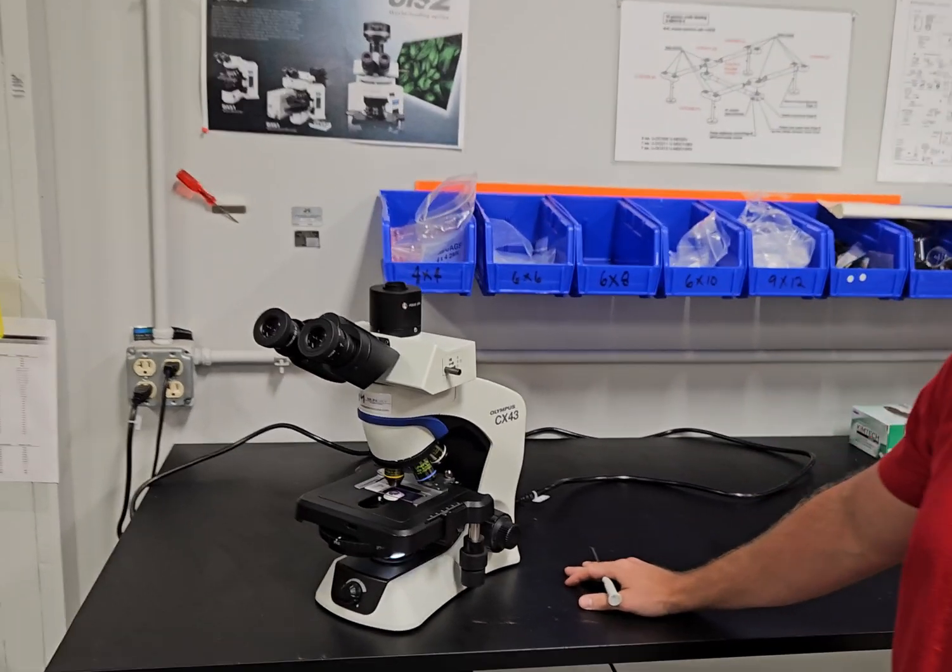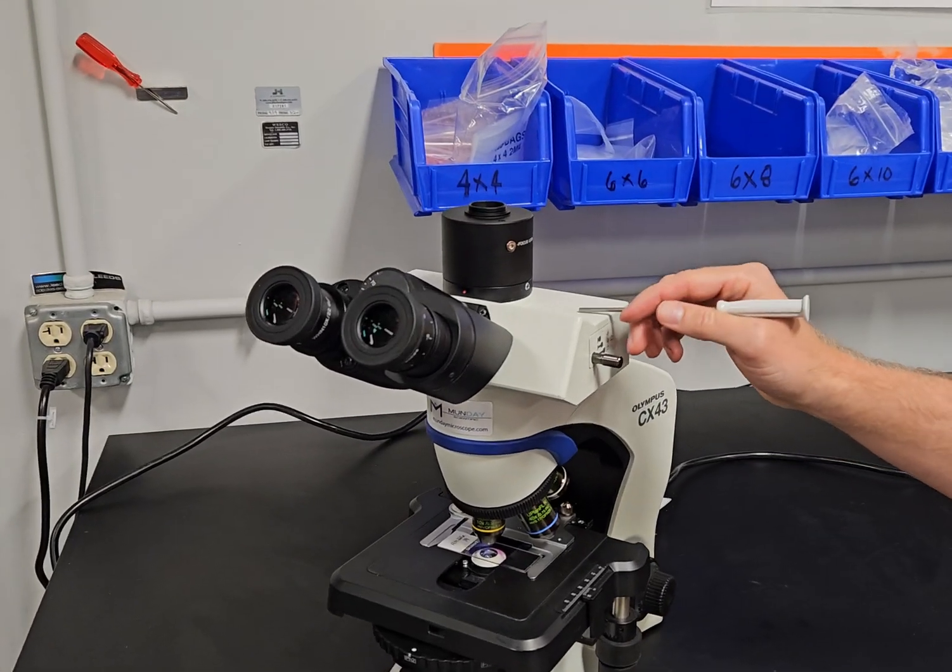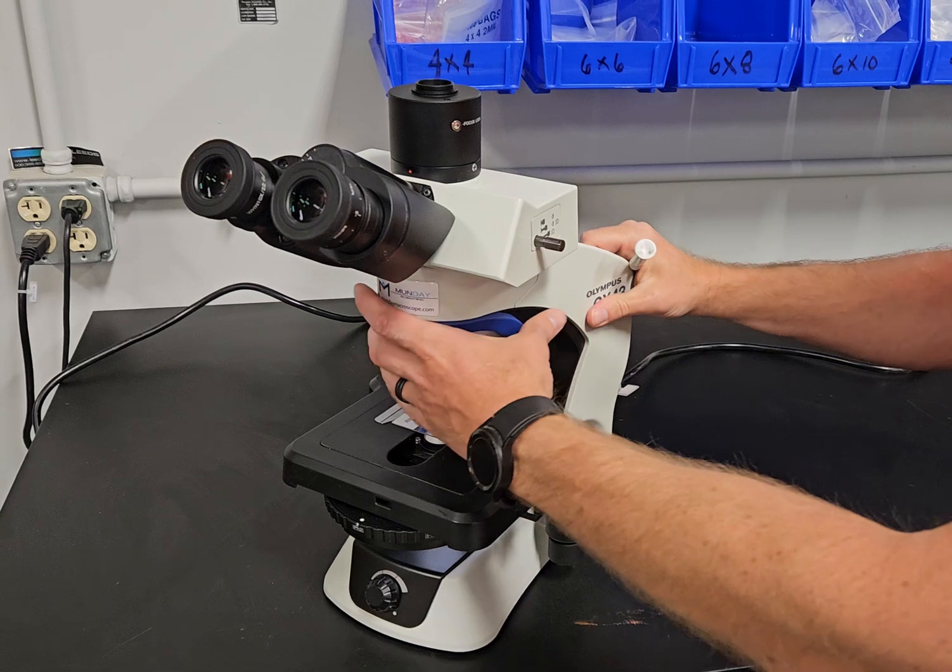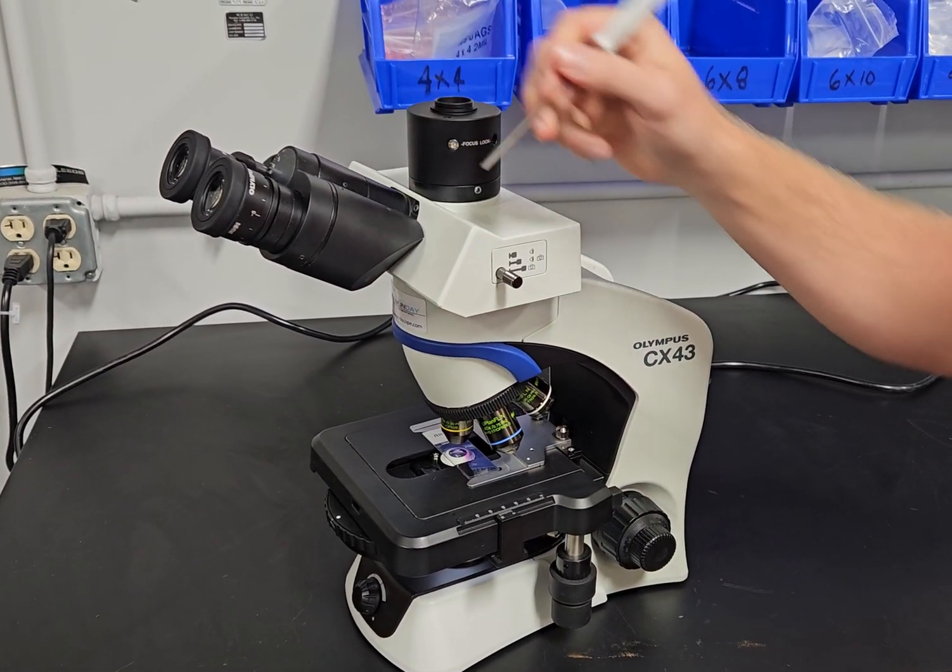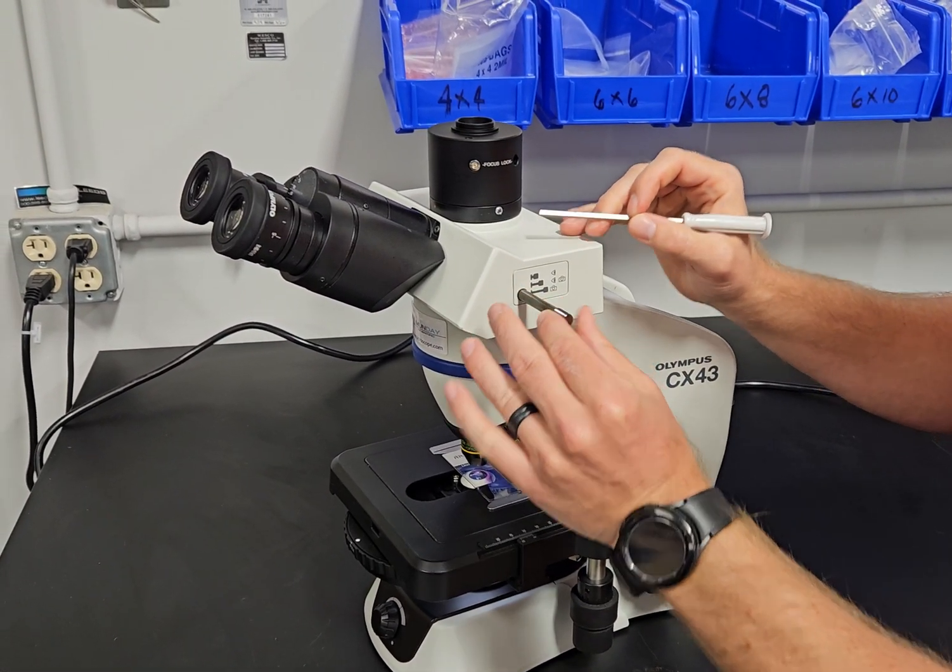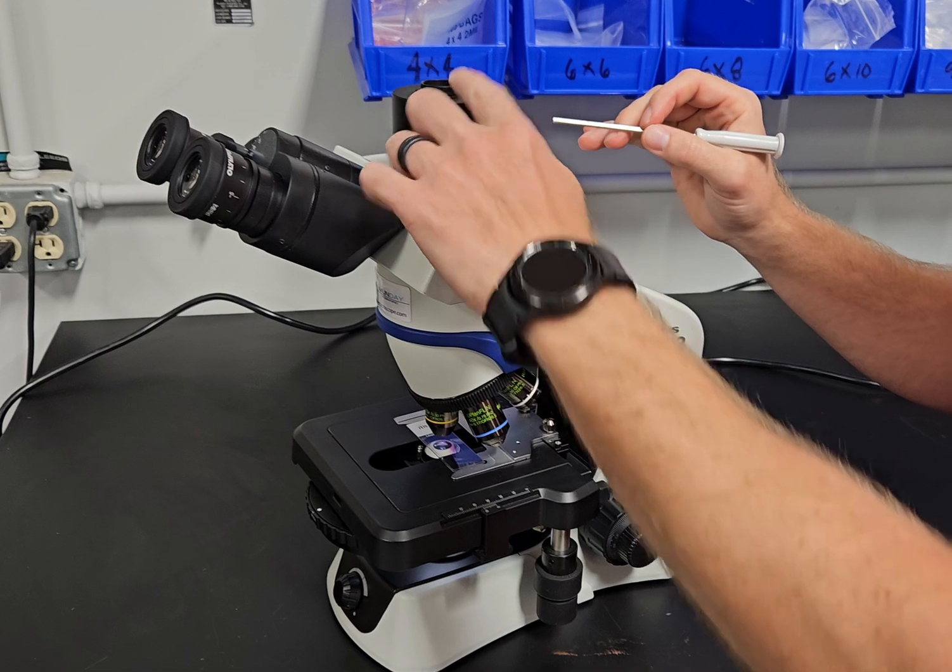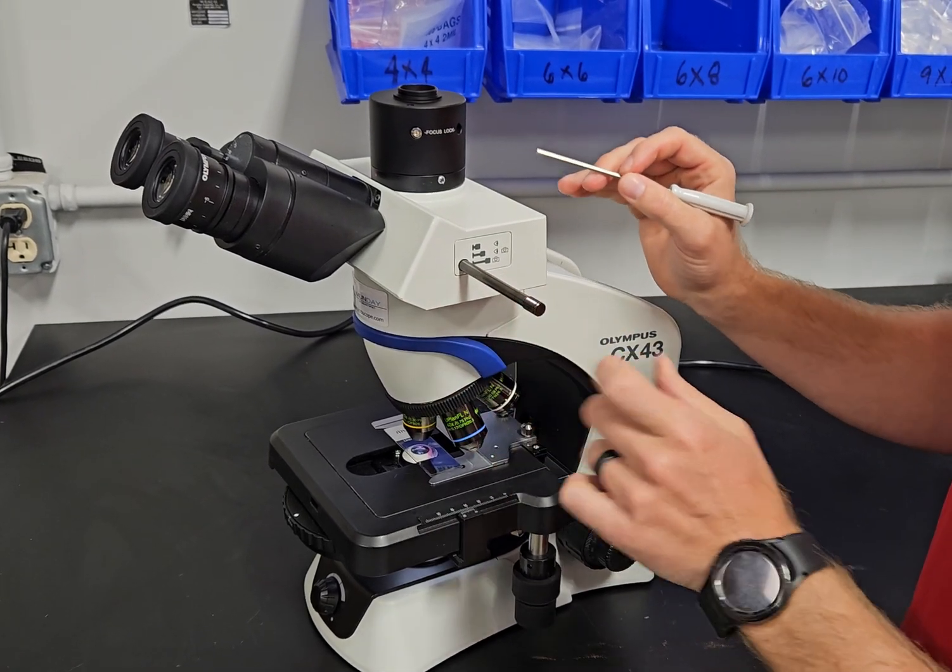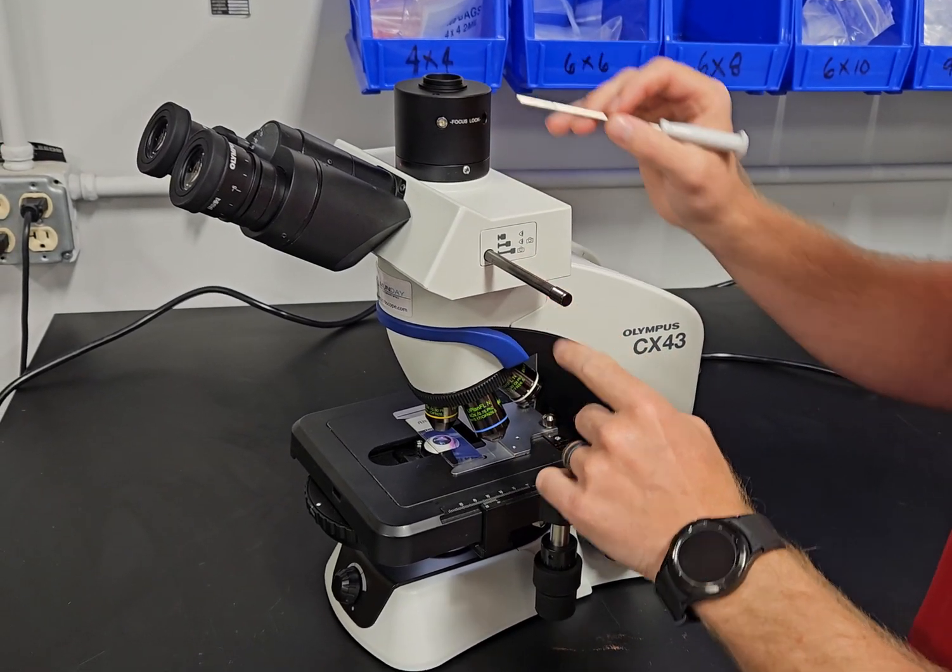Mike's going to come in here and we're going to talk about the scope. We have a trinocular head. The trinocular head has three positions: 100% position to the eyepieces, this splits the light between the eyepieces and the camera tube, and this is 100% light to the camera tube.